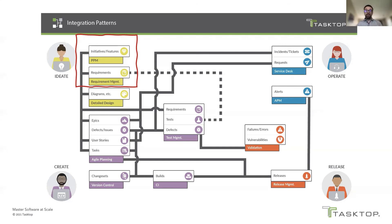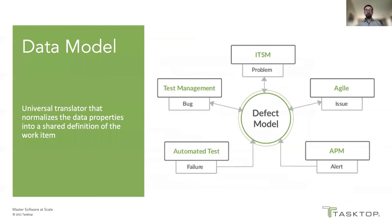As work progresses, updates such as status flow back upstream, providing the portfolio managers with visibility on execution and completion against the plan. To implement these integration patterns, what's really needed is a common data model to act as a universal translator that normalizes the data as it flows between systems.